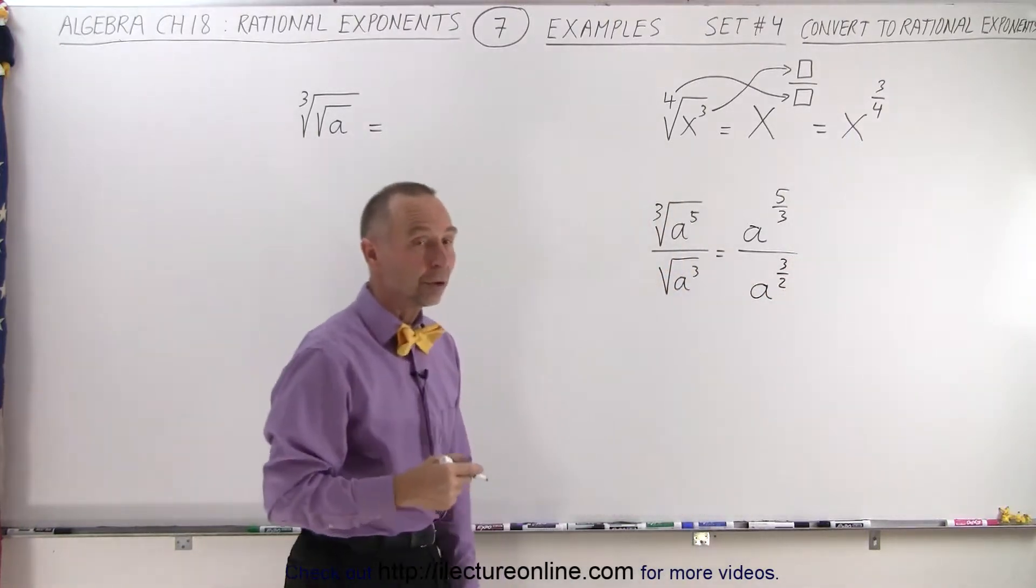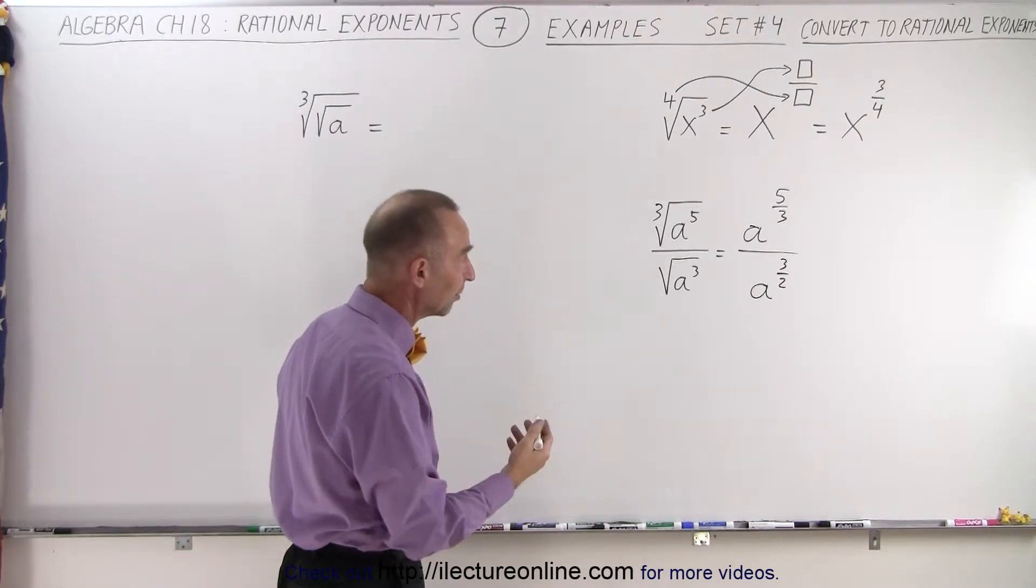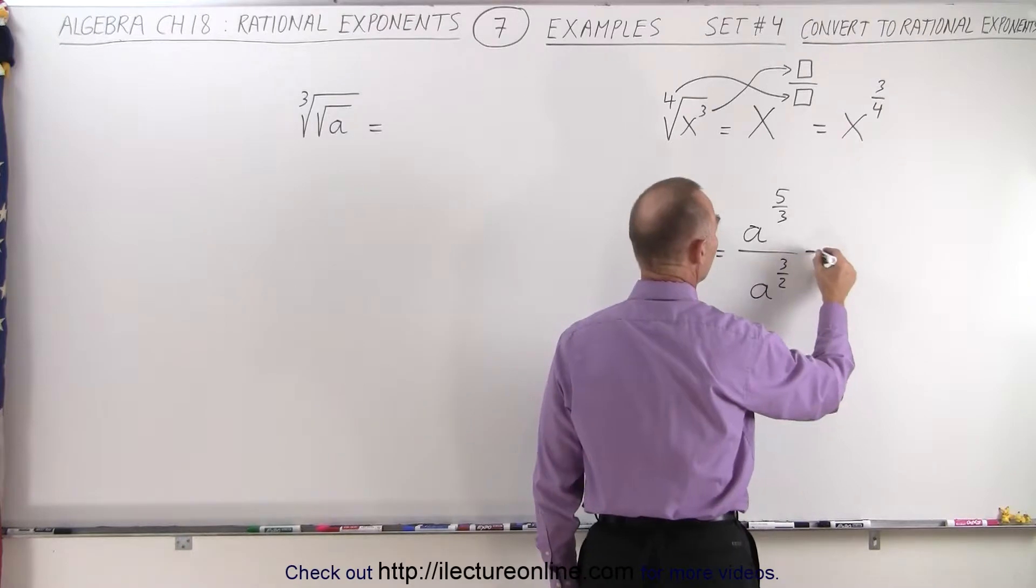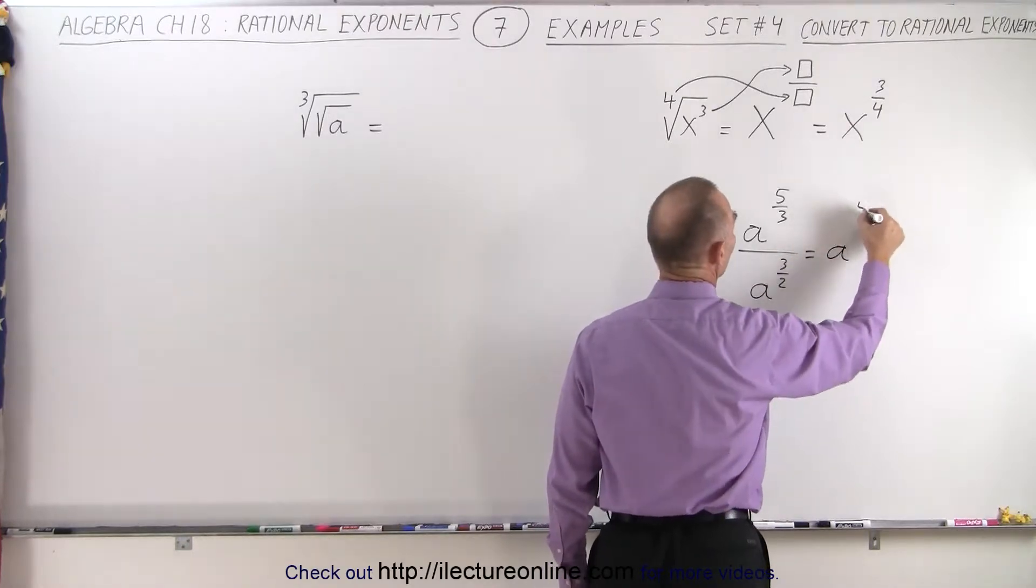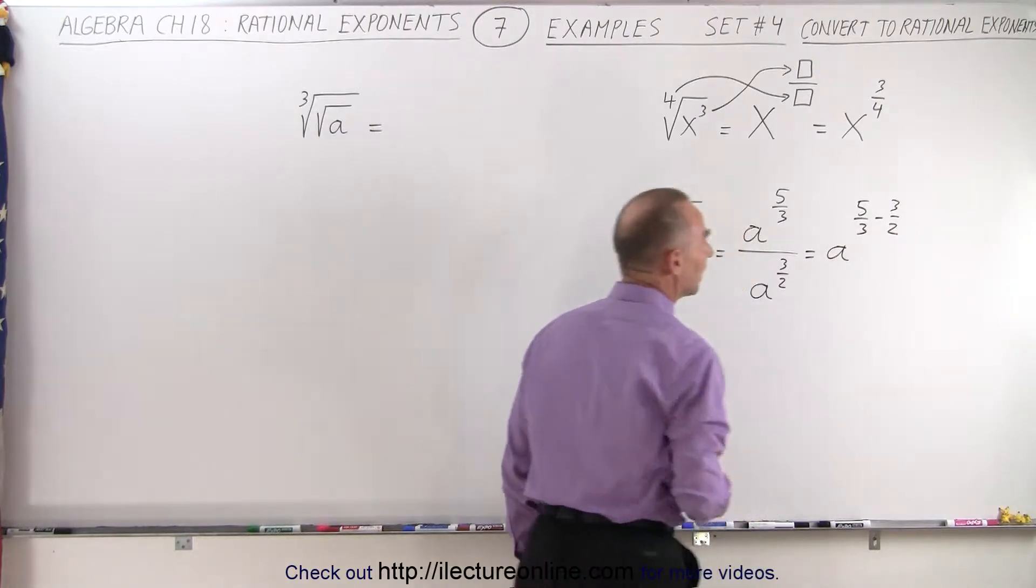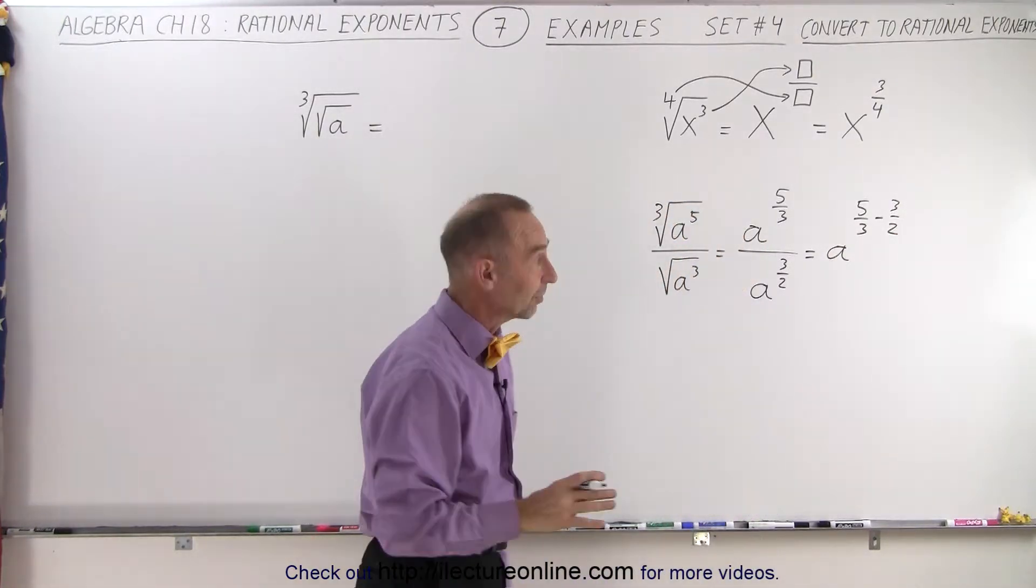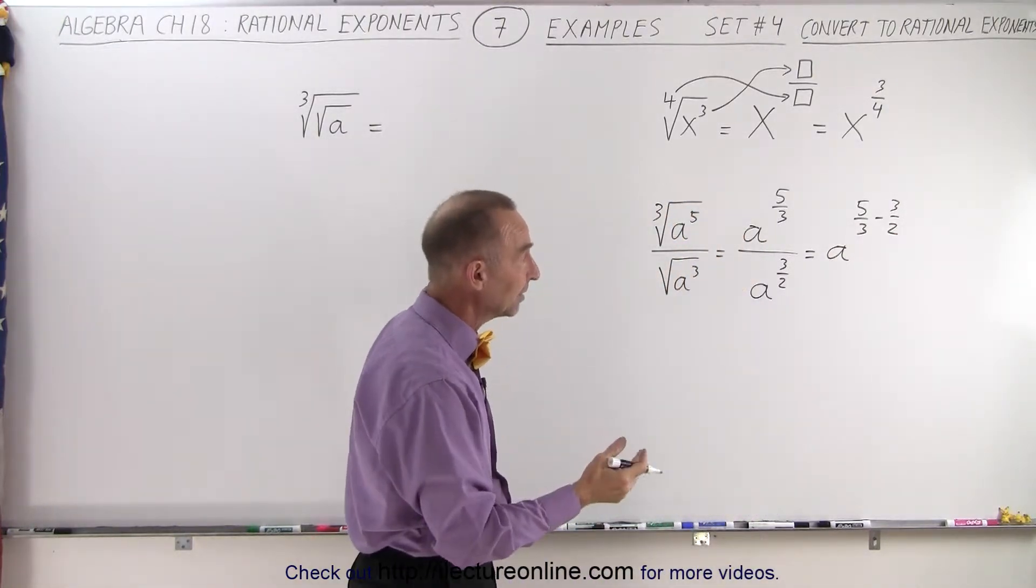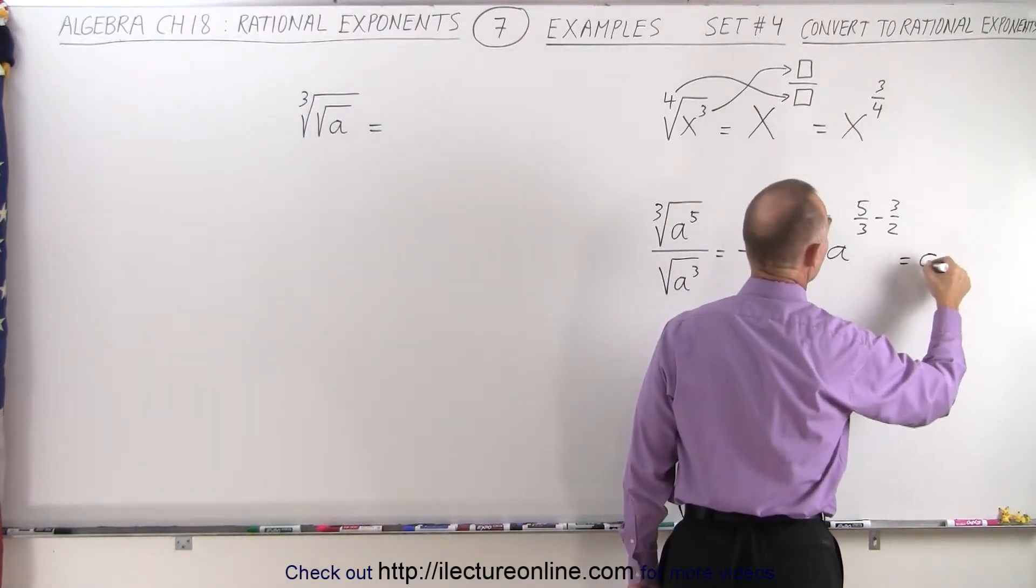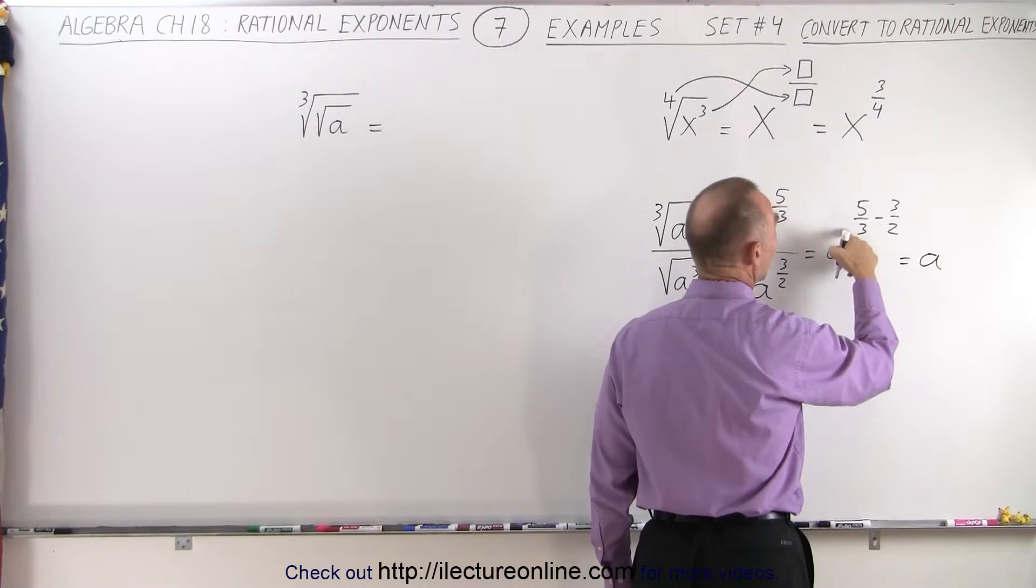And now we use our usual rules. We have the bases the same, we're dividing, that means we're going to subtract exponents. So this can be written as a to the 5 over 3 minus 3 over 2 power. Then you realize the denominators are not the same. We need a common denominator. In this case, that would be 6. So this can be written as a to the multiply both the top and the bottom by 2.